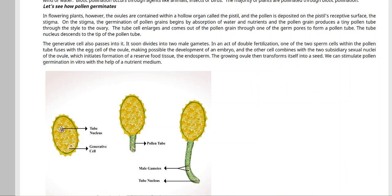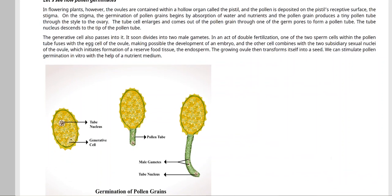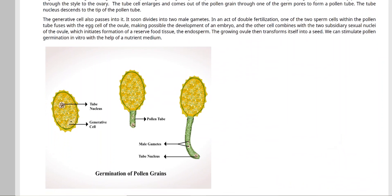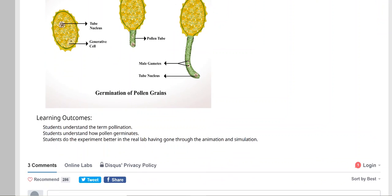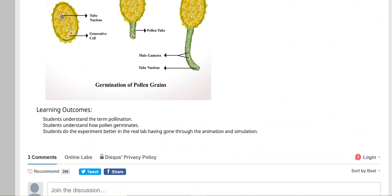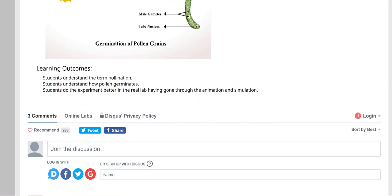The growing tubes transform itself into seeds. We can stimulate pollen germination in vitro. This is the natural process of flower, but we can also see in vitro media, which means in lab with nutrients medium. Learning outcomes: students understand the term pollination, students understand how pollen germinates, students do the experiment better in lab than through animation and simulations.